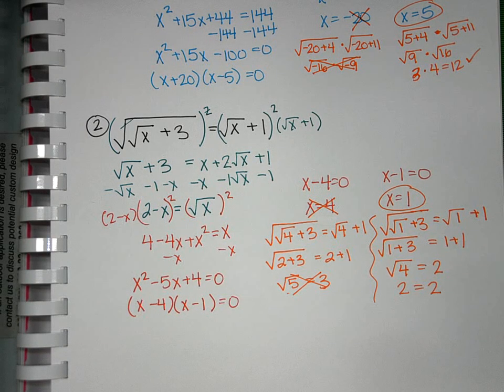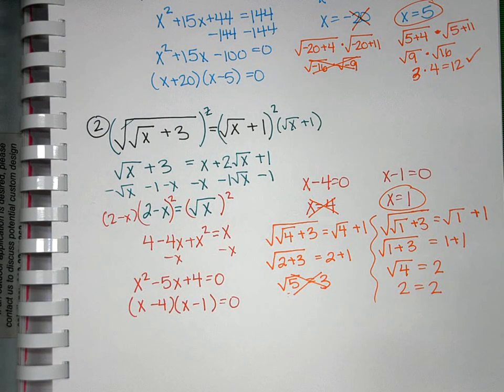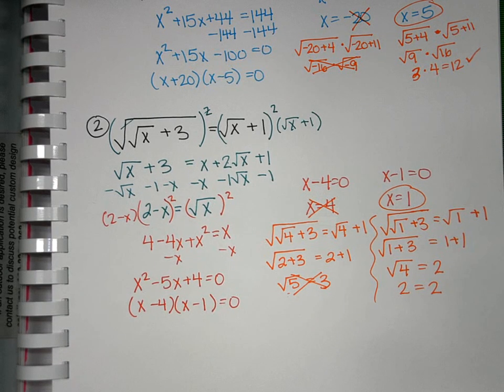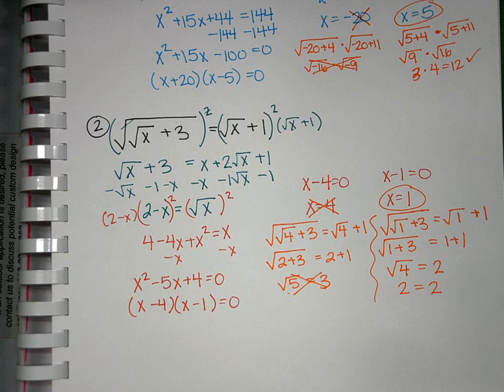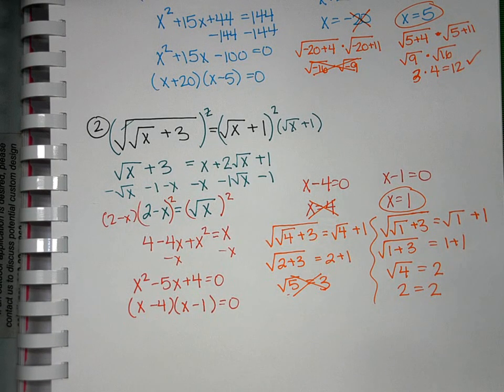The key thing to remember for this type when you see a radical in a radical is start by getting rid of the outside bigger radical. Get rid of the one that's on the farthest outside. Once you do that, then start working with the ones on the inside. And then don't forget to go back and check using the original problem because that's the one that's going to give us the most information as to whether or not it works.